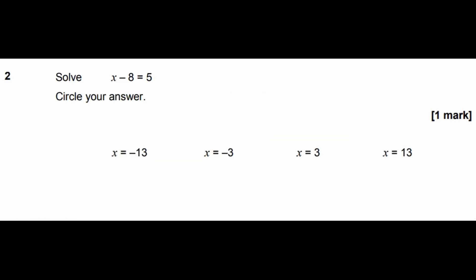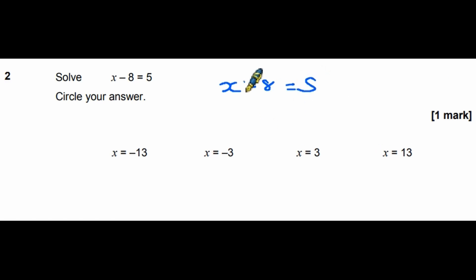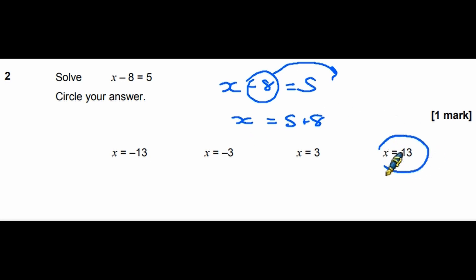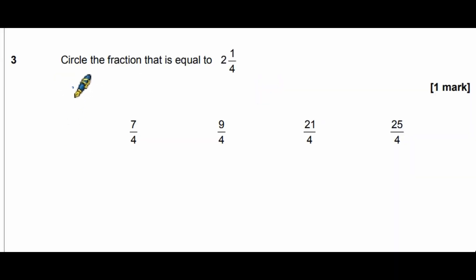Question 2: solve x minus 8 equals 5 and circle the answer. I usually do this by rearranging. If I've got x minus 8 equals 5, I take the minus 8 and move it to the other side of the equation, where it becomes a plus 8.